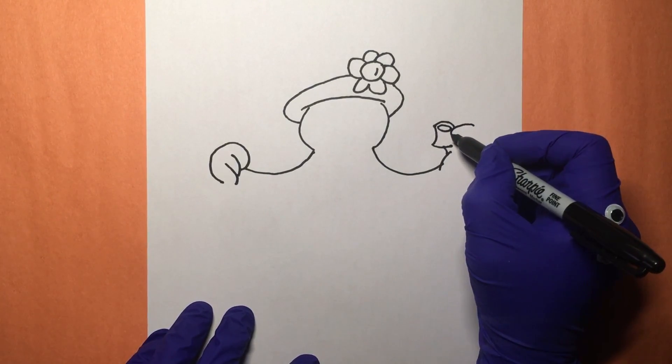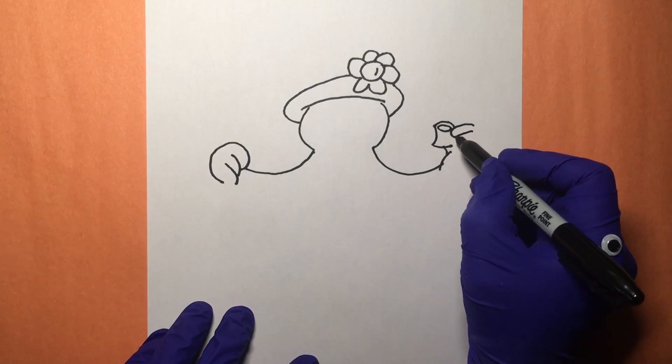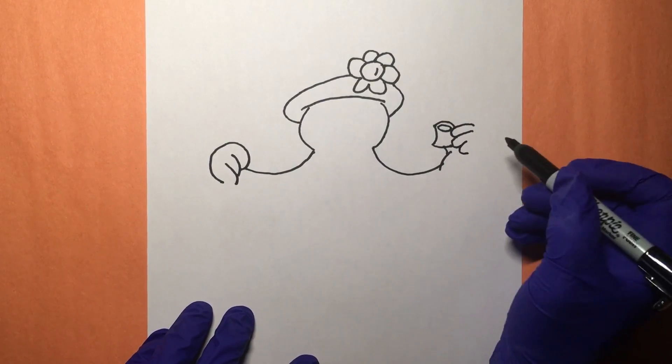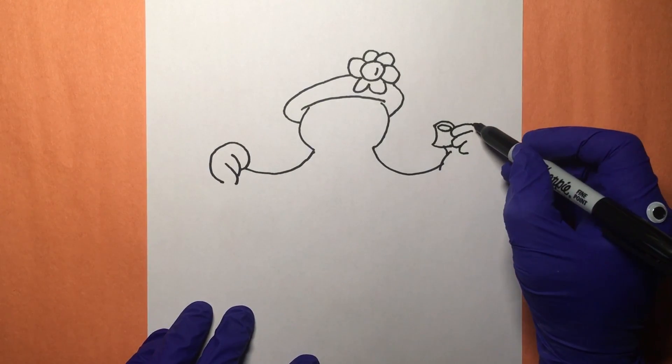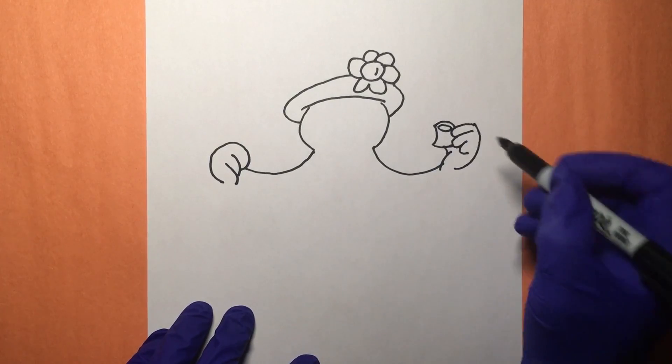Then we can draw his fingers here that are holding the pipe. There we go, Frosty's got those three fingers. Now we're gonna connect that around to the base of his wrist. There we go.